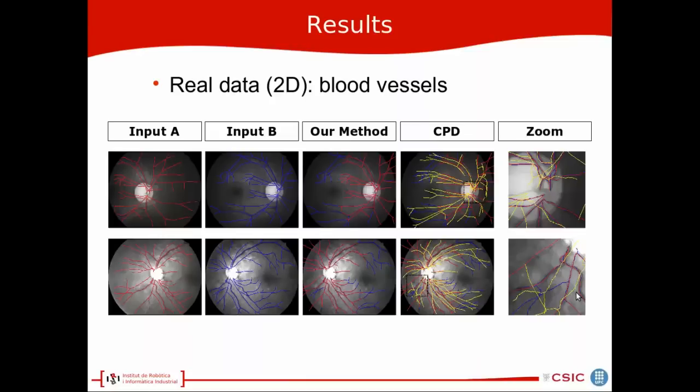We can see how our algorithm, in spite of the number of outliers, can find the final solution, the good solution, whereas the CPD is trying to adapt the point cloud to every point and it's failing due to the high number of outliers.